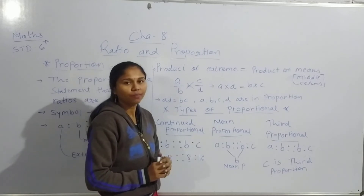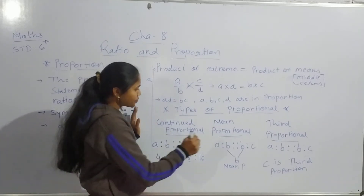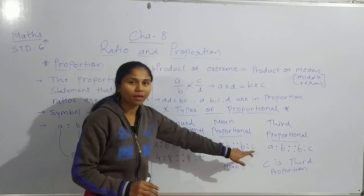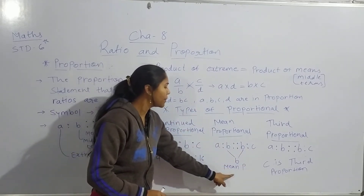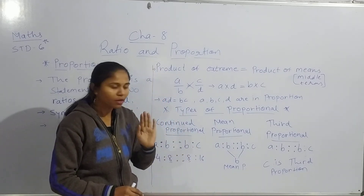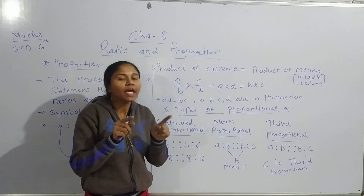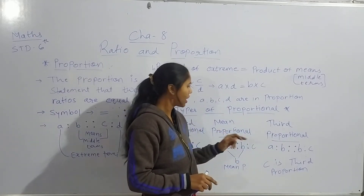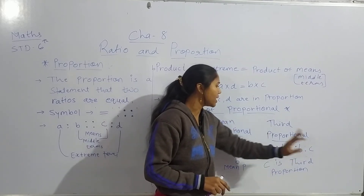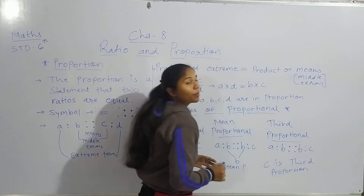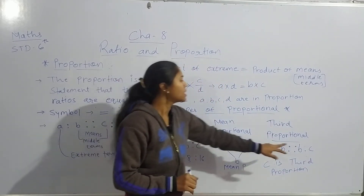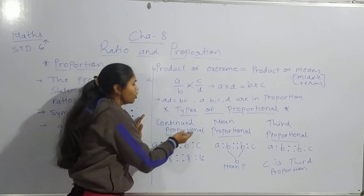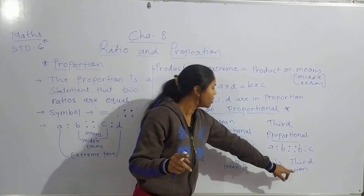Now, mean proportional. In the proportion a is to b and b is to c, b appears in both ratios — so only b is called the mean proportional. Next, third proportional: in a is to b and b is to c, c is the last term, so c is called the third proportional.